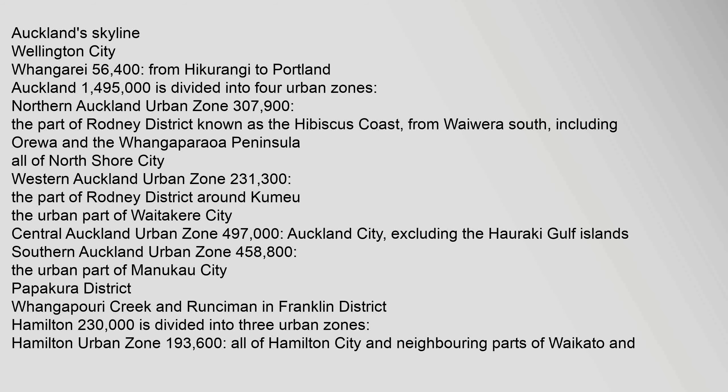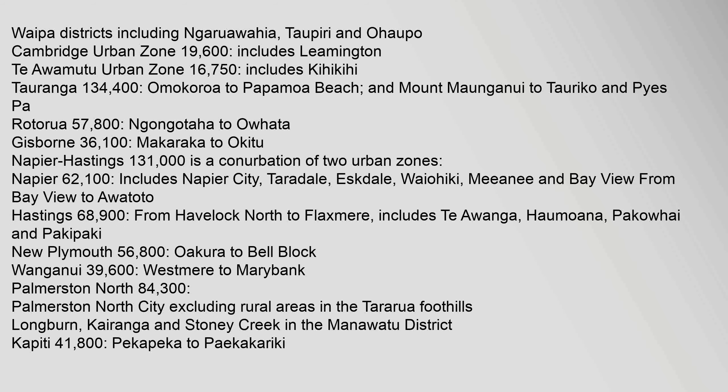Southern Auckland urban zone includes the urban part of Manukau City, Papakura district, and parts of Franklin district. Hamilton 230,000 is divided into three urban zones: Hamilton urban zone 193,600, covering all of Hamilton City and neighbouring parts of Waikato and Waipa districts including Ngaruawahia, Taupiri and Ohaupo. Cambridge urban zone 19,600, includes Leamington. Te Awamutu urban zone 16,750, includes Kihikihi. Tauranga 134,400, from Omokoroa to Papamoa Beach and Mount Maunganui to Tauriko.